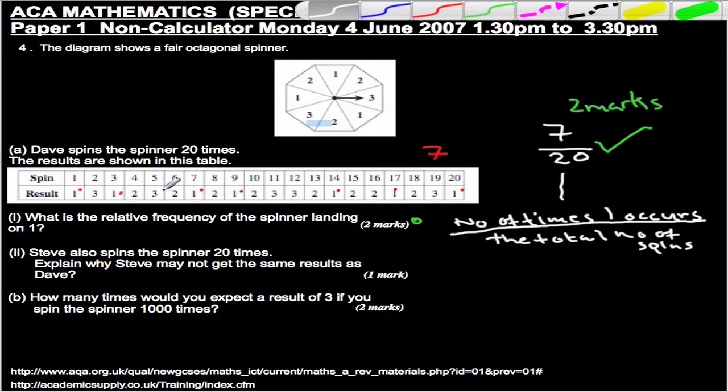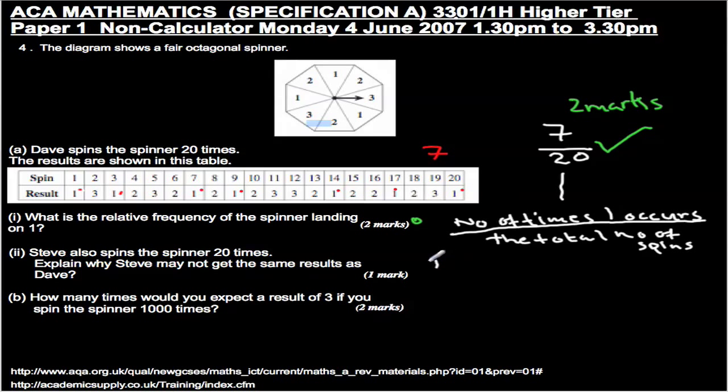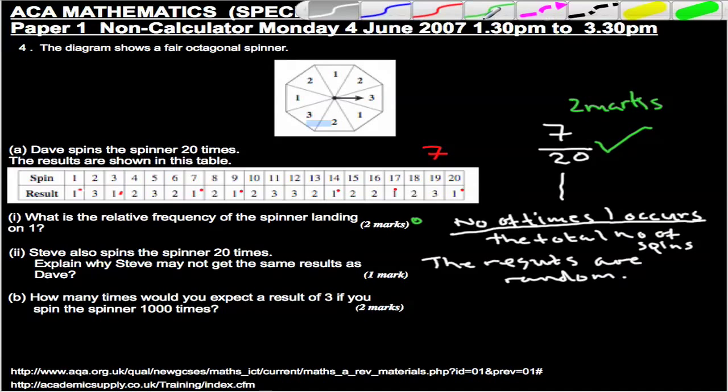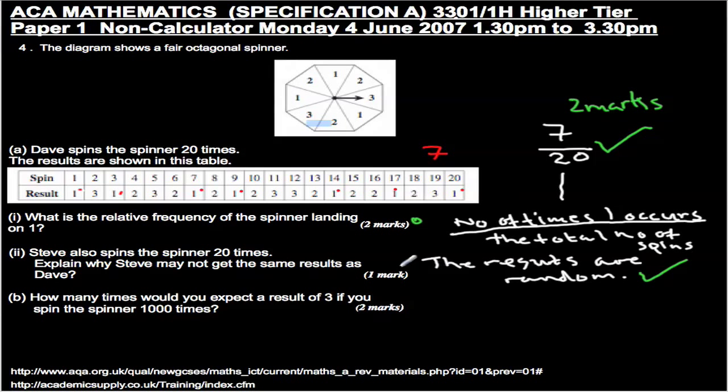Well, actually, each time you spin, it's a random event. So when you make a spin, it could land on any number. So intuitively, it will not be the same. It's very unlikely to be the same. So the reason is the results are random. And that's great. We're on a flying start here and we've got another mark. So we've got another mark there. So we've got 3 marks in total now. So 1 mark there.